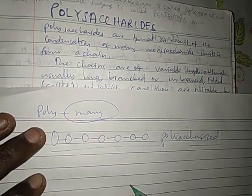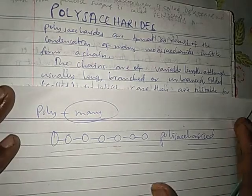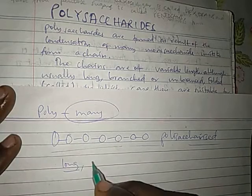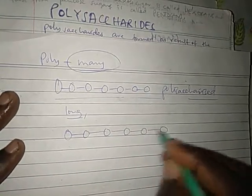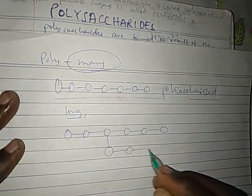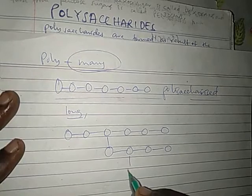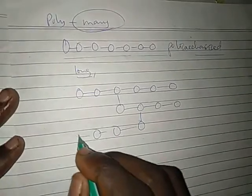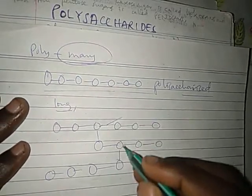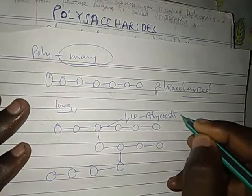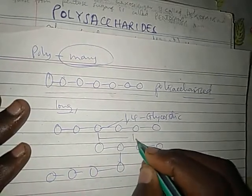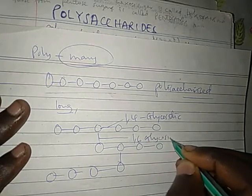They can vary in chain length, although usually they are long, and they are sometimes branched or sometimes unbranched. If they are branched, assuming this is our chain, then here we have a branch and here maybe another branch. In polysaccharides, the bond in the straight chain is a 1,4 glycosidic bond, while the bond of the branching is a 1,6 glycosidic bond.